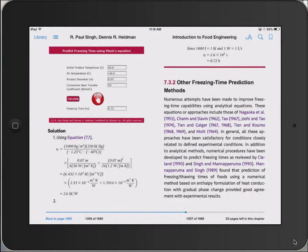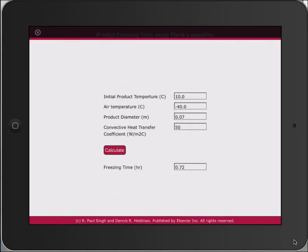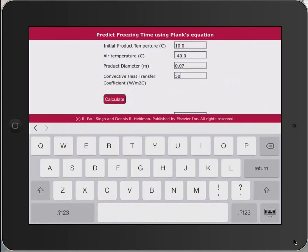Another important feature in this EPUB3 version is the inclusion of around 100 what-if problems. Here a solved example using Planck's equation is set up so that input values can be changed to see the results. Here we change the convective heat transfer coefficient from 50 to 150 to see its effect on the freezing time that decreases from 0.72 hours to 0.44 hours.